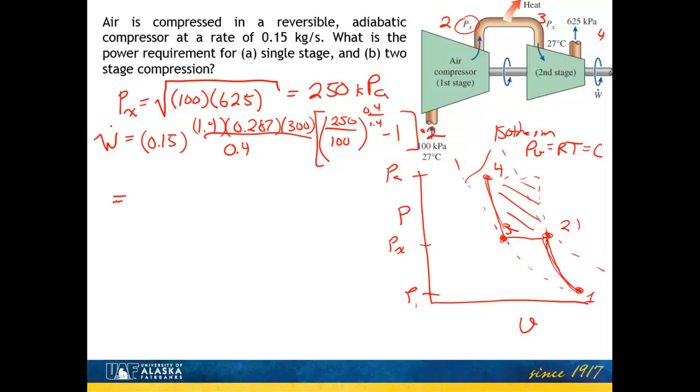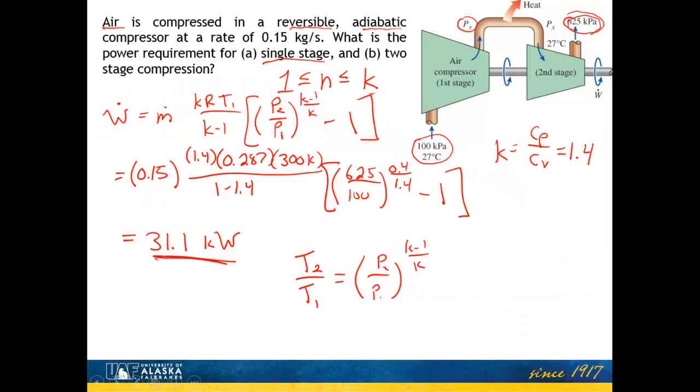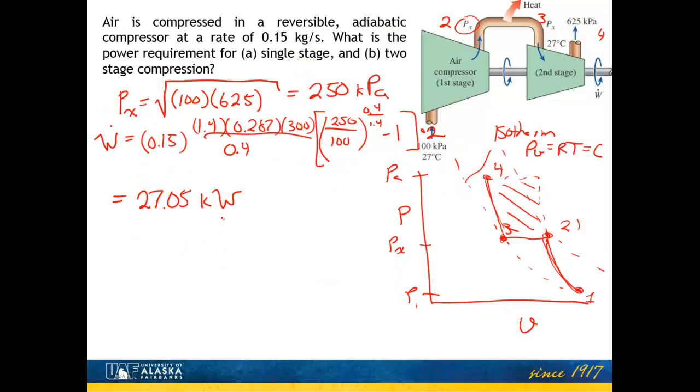So if I do all of that arithmetic, that comes out to be 27.05 kilowatts. And if we bounce back to our previous example, we had 31.1 kilowatts. Now we're at 27.05. So we have a savings of about 10 to about 12% there. So not an insignificant amount by putting in a two-stage compressor. So that completes the problem.